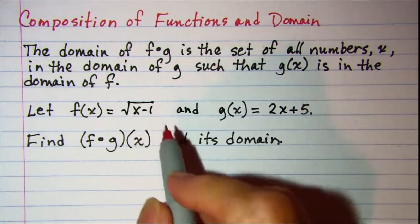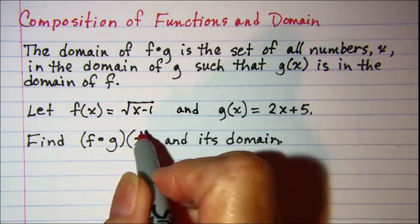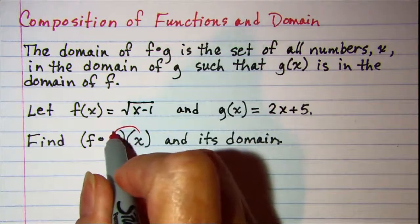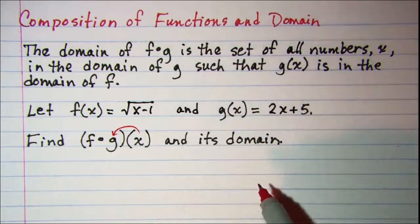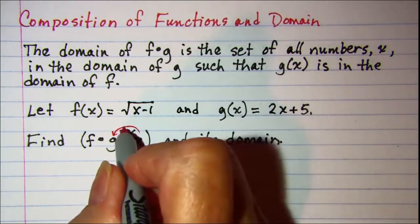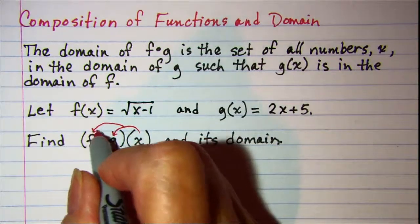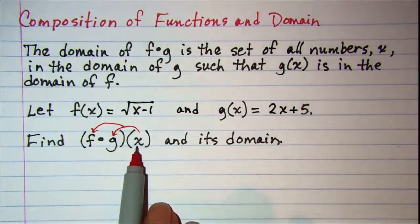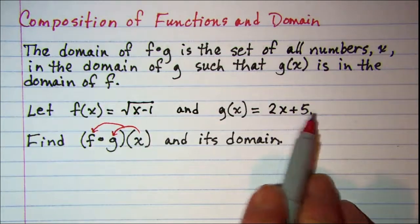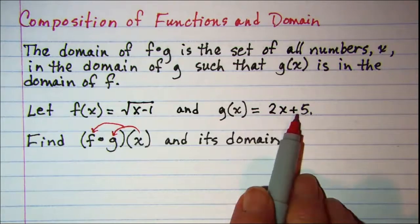When you're finding composition, you first take the argument and put it into the function that it's closest to, and then that you'll put into f. So g(x) is 2x plus 5 and the domain of g(x) is all real numbers.